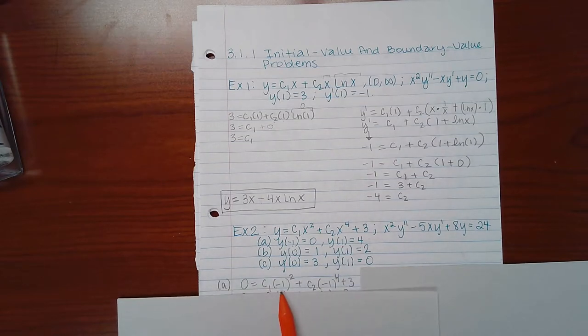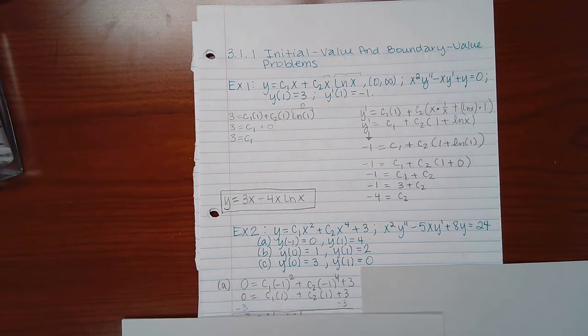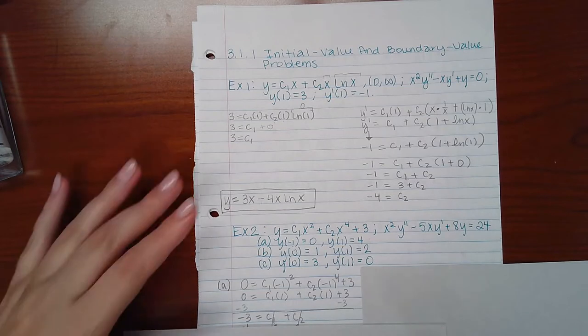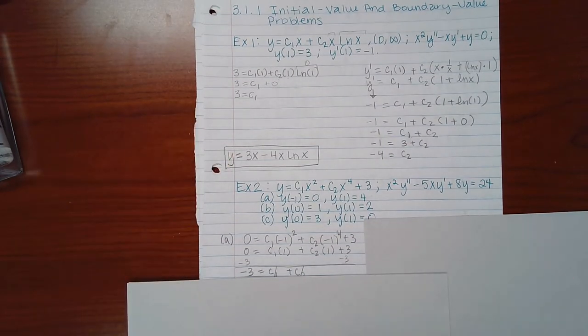Although when we square negative 1, and when we raise negative 1 to the power 4, we end up with positive 1 here and positive 1 here. Therefore, our next line will be C1 times 1 plus C2 times 1 plus 3. Now, we can minus 3 on both sides so that the constant is on the left-hand side, and what we end up with on the right-hand side is just C1 plus C2.